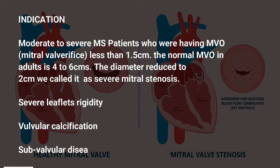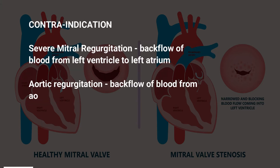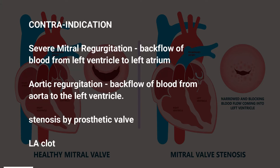Indications include moderate to severe mitral stenosis in patients with a mitral valve orifice (MVO) less than 1.5 centimeters. The normal MVO in adults is 4 to 6 centimeters. When the diameter is reduced to 2 centimeters it is called severe mitral stenosis, along with severe leaflet rigidity, valvular calcification, and sub-valvular disease.